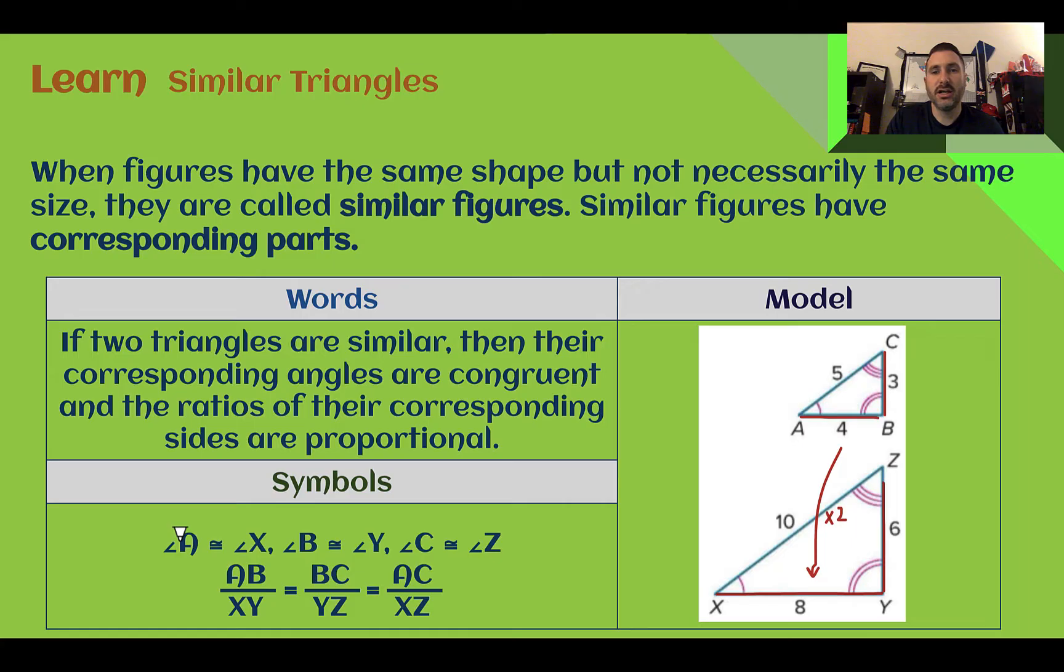If we look at the angles here, angle A corresponds with angle X, angle Y is with B, and then Z is with C. And we can tell which angles are corresponding, again, by how many little arcs there are. So this had one arc, one arc, those would be your corresponding angles, two arcs with two arcs, three with three, and so on.